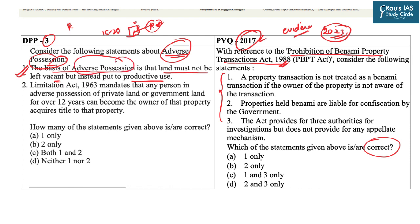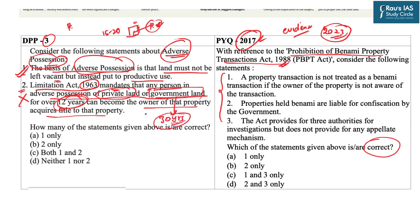Adverse possession is governed by the Limitation Act 1963. Statement two says this act mandates that any person in adverse possession of private land or government land for over 12 years can become the owner of that property. This statement is incorrect — the 12-year period applies to private land, not government land. For government land, the possession must be for at least 30 years. So statement two is incorrect, and only statement one is correct — option A is the correct answer.